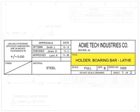The drawing title block can also be called the noun or nomenclature. A short description of what the item depicted, or the name of the part, is typically located in this block. The drawing number gives the drawing a unique identifier as a standalone document.